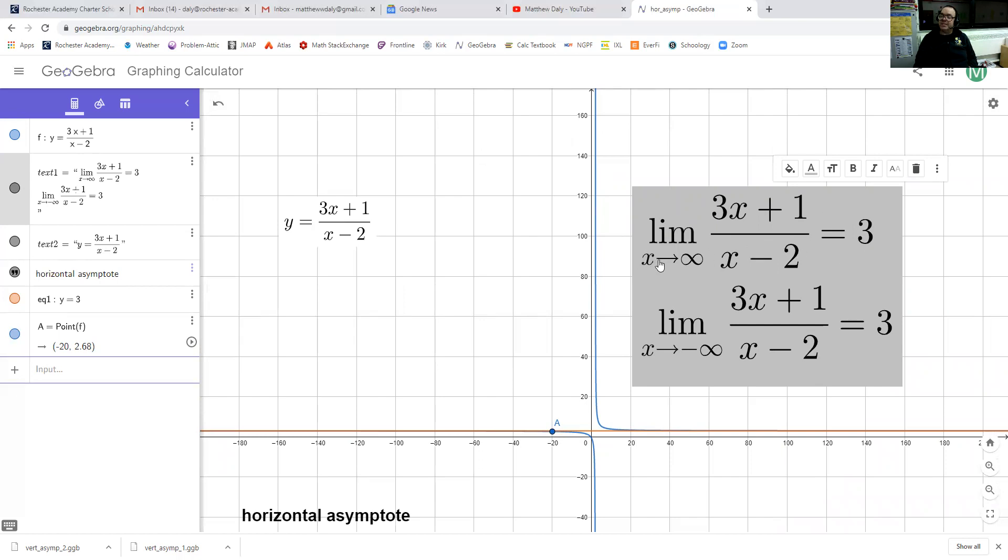All right, so as x gets higher and higher without bound, the value of this function is approaching 3. And we saw the exact same thing when we were heading off to the left. So in this case, the limit as x approaches negative infinity, and the value of this function once again is approaching positive 3.